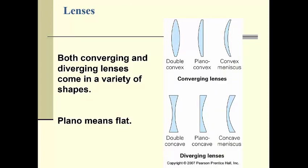The same is true when we talk about lenses. Lenses can also have convex and concave shapes. A concave mirror is converging, and a convex lens is also converging. We'll talk about that term in a minute.